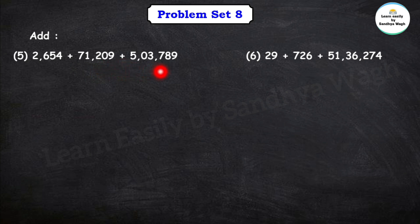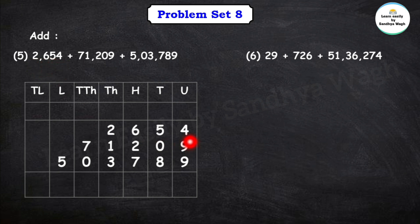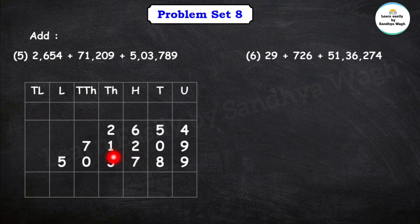Next question: 2,654 plus 71,209 plus 5,03,789. We have to add 3 numbers here. We need to arrange them properly — the 4-digit number, the 5-digit number, and the 6-digit number — in their correct place values before adding, otherwise our answer will be wrong.